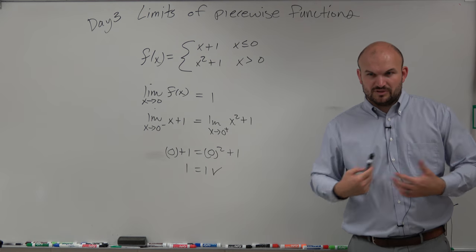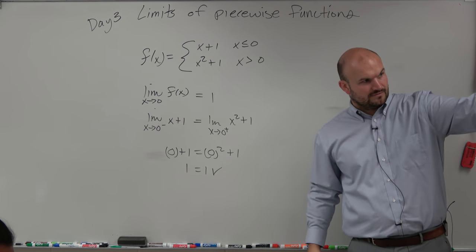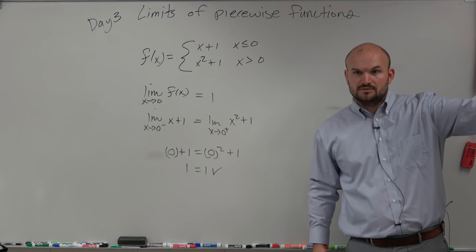Does that kind of make sense? For the limit to exist, the left and the right hand have to be equal to each other. Look at the graph. For the limit to exist, they have to be equal, right?